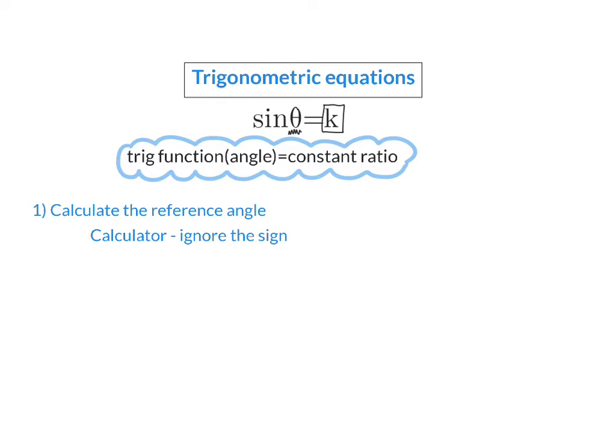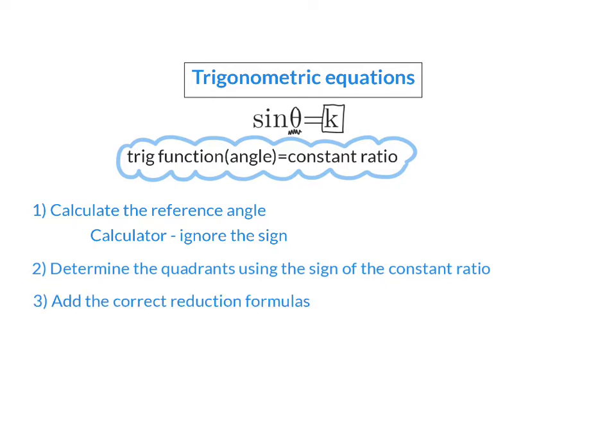Once we have our reference angle, our second step is to determine in which quadrants we are working. We use the sign of the constant ratio to tell us whether we are working in the quadrants where this trig function is positive or negative. Next, we add the correct reduction formula for each of the quadrants, where the acute angle will now be our reference angle. Then all that's left to do is simplify.